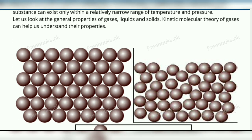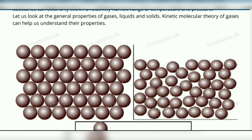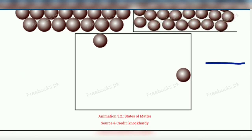The first difference between liquids, solids and gases is the distance between their molecules. This picture is of solids — in this you can see the molecules are very closely packed. This picture is of liquids — in this you can see the molecules are very close to each other, but they are not very closely packed and not in a definite form. And this is the picture of gases — in this you can see the molecules are very far from each other.